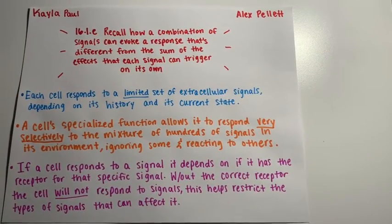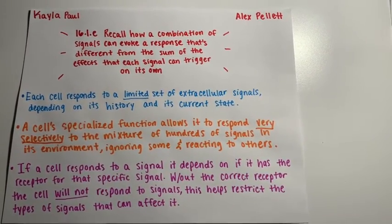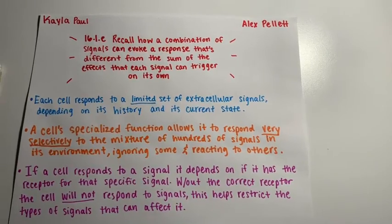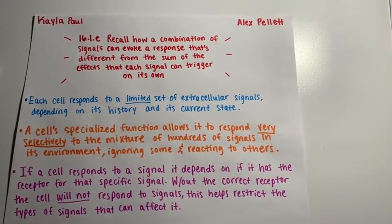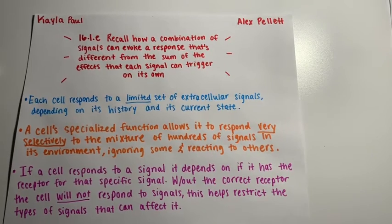If a cell responds to a signal, it depends on if it has a receptor for that specific signal. Without the correct receptor, the cell will not respond to signals. This helps restrict the types of signals that can affect it.